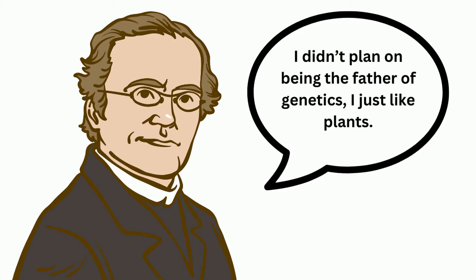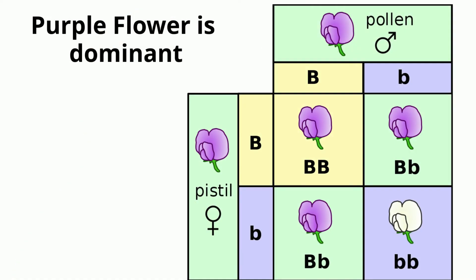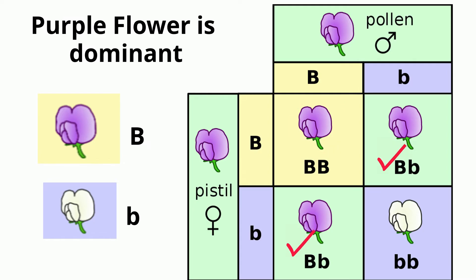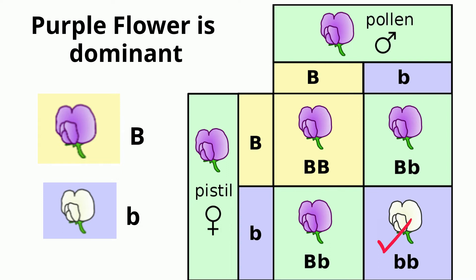Gregor Mendel, who is the father of genetics, noticed with pea plants that the gene for flower color could be white or purple. If the plant inherited two copies of the purple color, it would have purple flowers. If a plant inherits one copy of a purple flower and one copy of a white flower, it will have purple flowers. A plant that inherited two copies of the white allele would have white flowers.